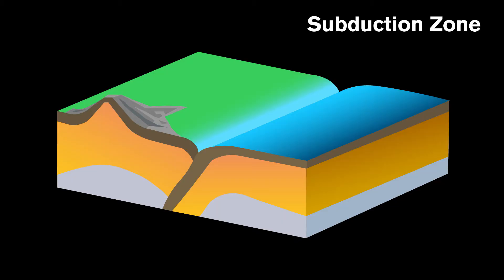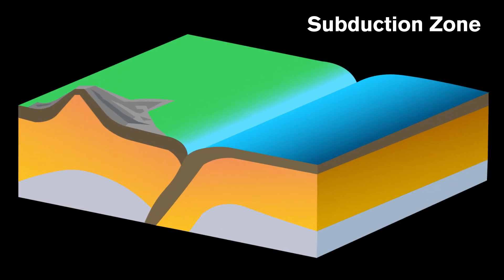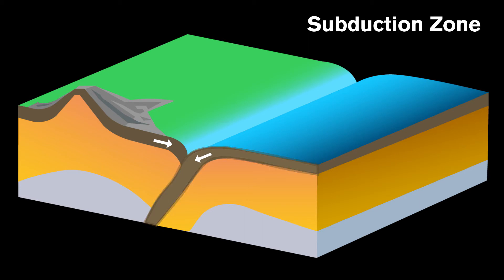Another way we can form magma is through subduction zones. Subduction zones are where two tectonic plates are moving towards each other. This causes the denser plate to dive underneath the more buoyant plate.